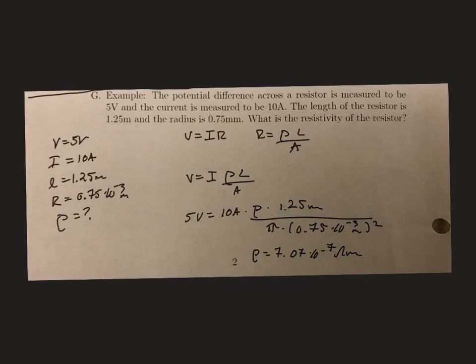In this example problem, we have a potential difference across the resistor measured as 5 volts and the current is 10 amps. We know the length of the resistor is 1.25 meters and the radius is 0.75 millimeters. We want to know what the resistivity of the resistor is.